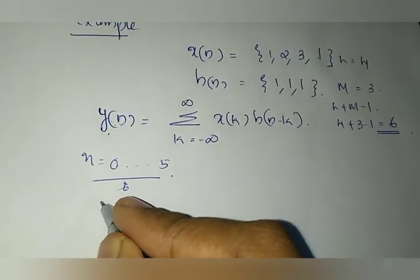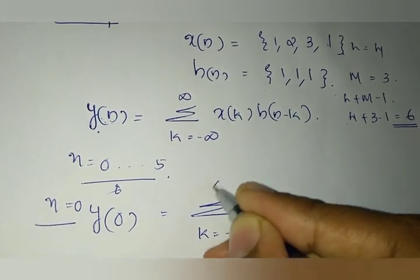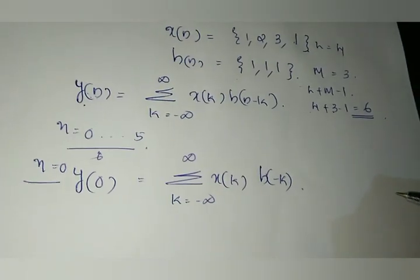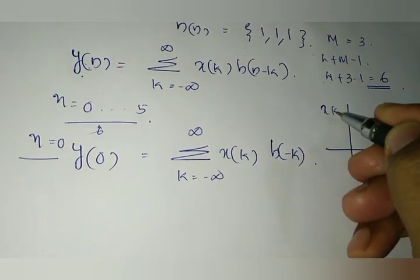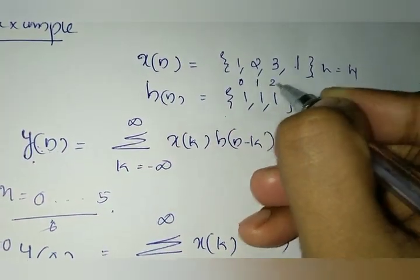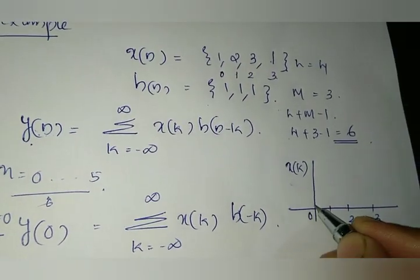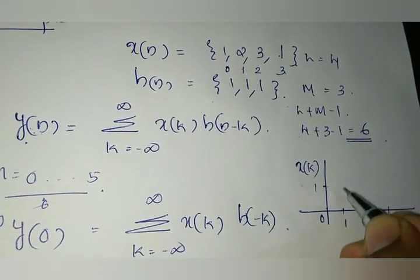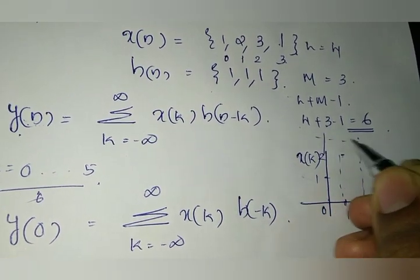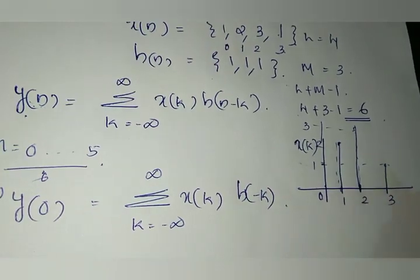First I am going to find the value y of 0, where n is taken as 0. The equation becomes sigma k from minus infinity to infinity of x of k into h of minus k. The signal x of k has time points 0, 1, 2, and 3, with values 1, 2, 3, and 1 respectively. So this is your x of k signal.